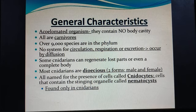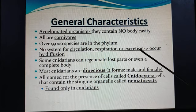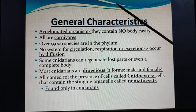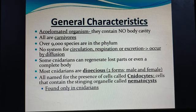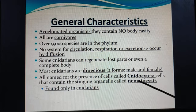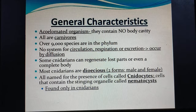There is no system of circulation, respiration, or excretion; everything occurs through diffusion. Some Cnidarians can regenerate lost parts or even a complete body. They are sexually separate, called dioecious — male and female organisms are separate. These organisms have nematocysts, which are sting-like structures. Nidocytes are also specialized cells present in the body of Cnidaria.